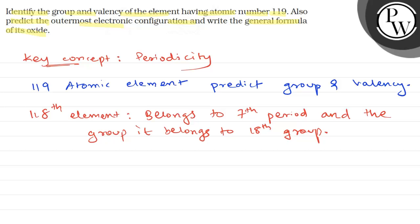Therefore, we can say that the element with 119 atomic number is going to belong to group 1, because this is the outer electronic configuration, which is 7s² 7p⁶ for the 118th element.